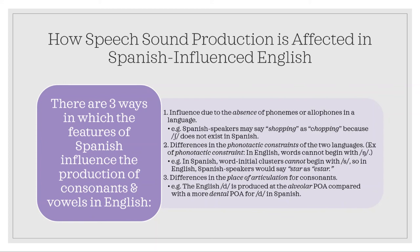Differences in phonotactic constraints — what sound sequences are possible in a given language — can also affect production. An example in English is that the consonant NG cannot occur at the beginning of words. Additionally, differences in place of articulation matter: in English, the D phoneme is produced with the tongue tip making contact with the alveolar ridge, while in Spanish the D phoneme is produced with the tongue tip making contact with the back of the upper central incisors, creating a subtle difference in how a Spanish-influenced English speaker would produce a word like 'dog.'